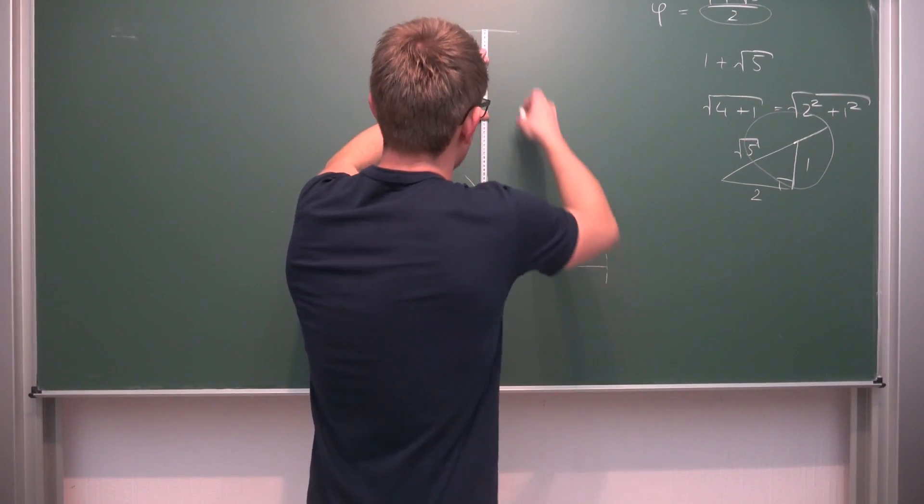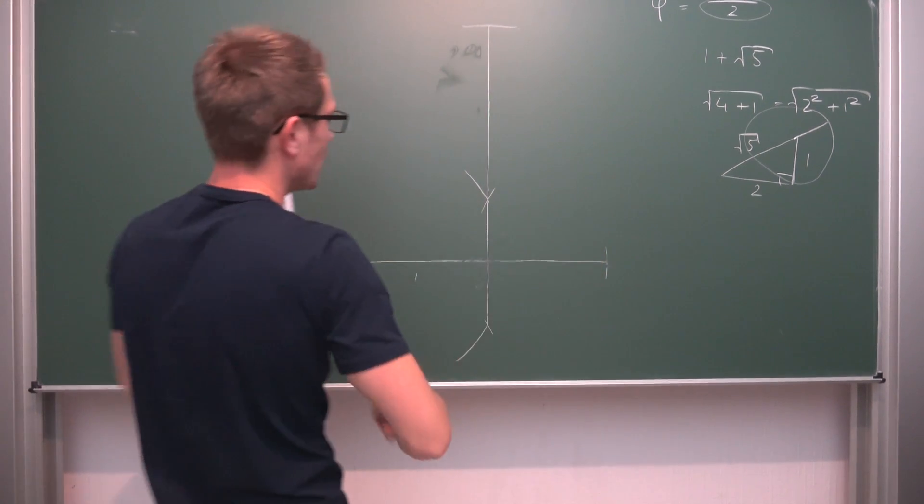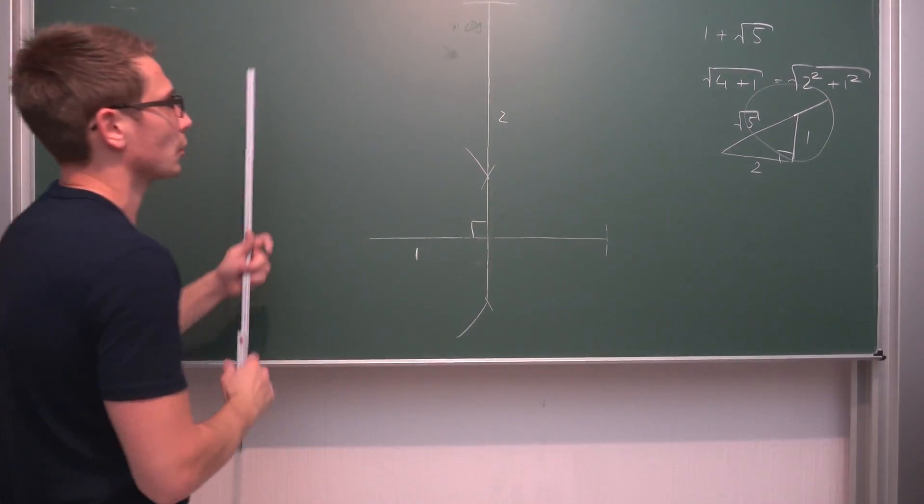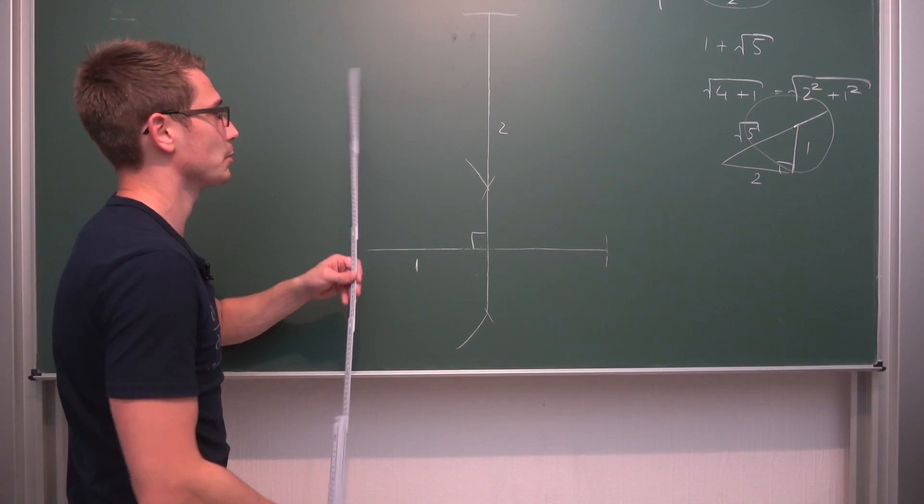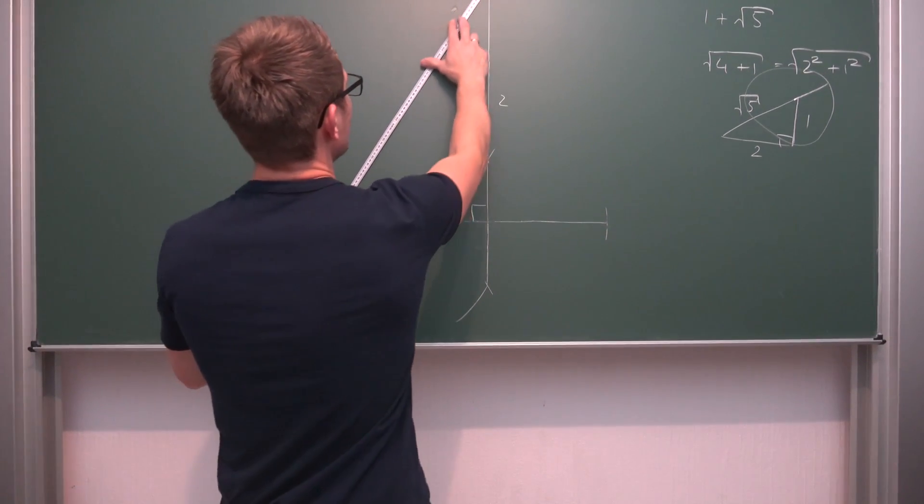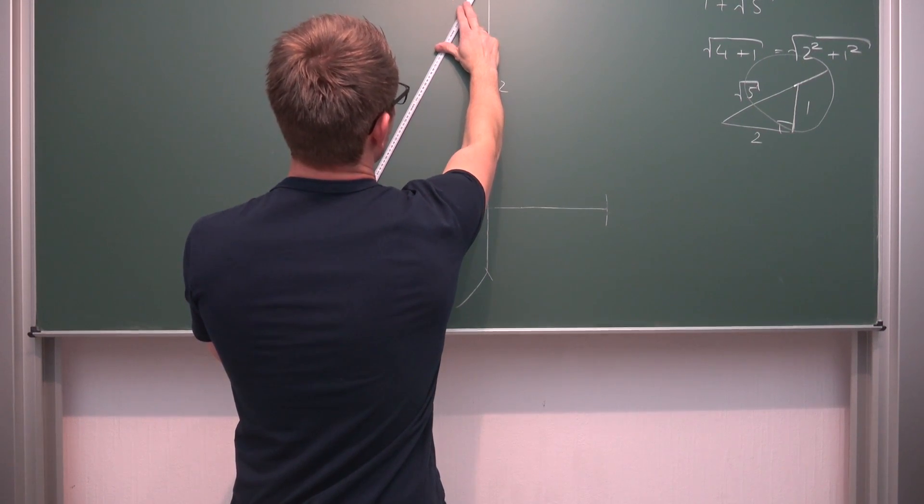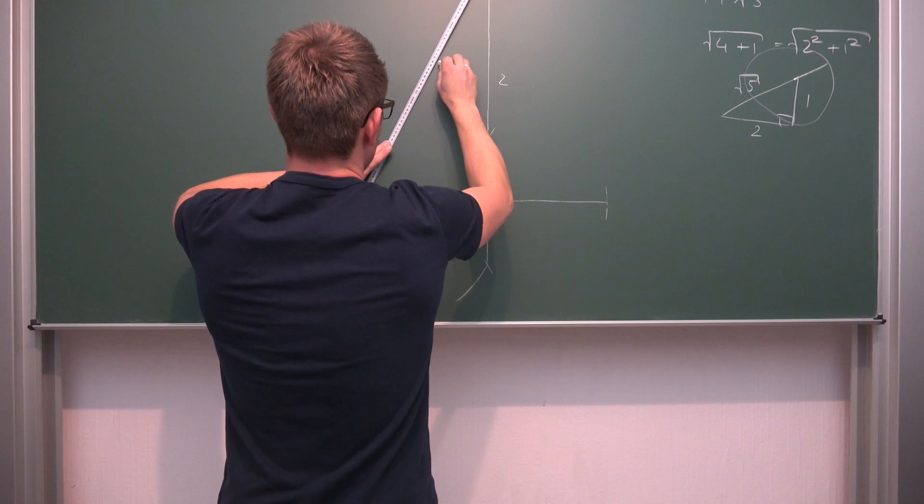We are nearly done because now the cool thing is we've got our right angle here. This is 1 unit long, this is 2 units long. Meaning the corresponding length that we get here as the hypotenuse is going to be square root of 5 long. Probably. We will later see if our construction worked once we measure everything and convert units basically.